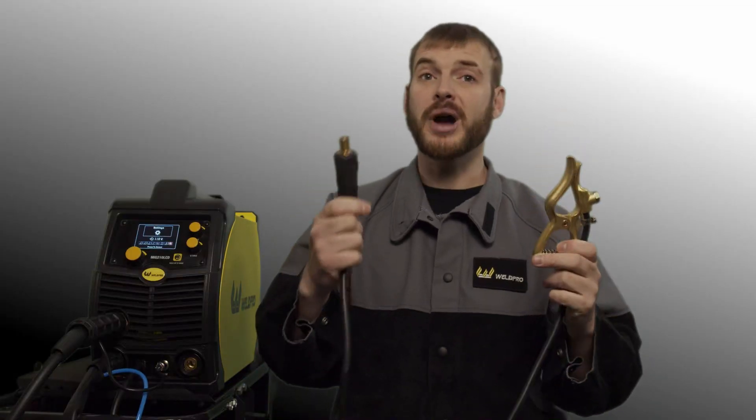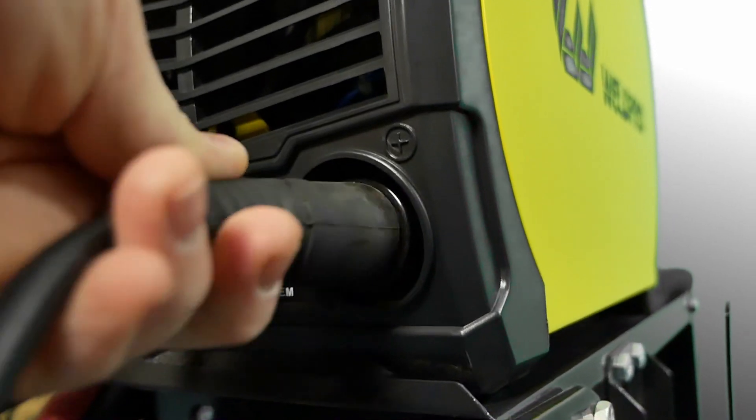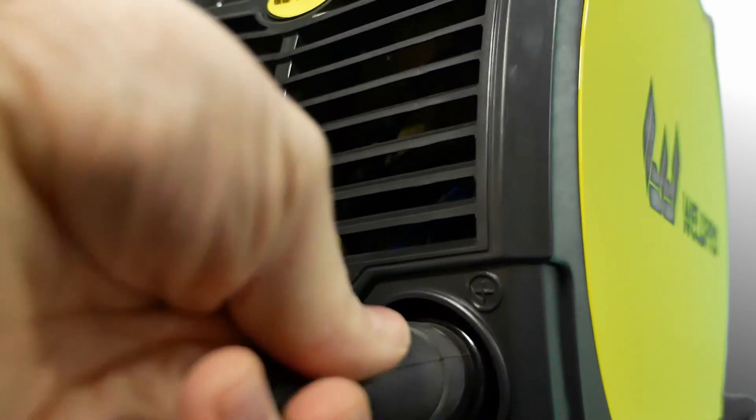The DINZ connector for your ground clamp will need to be switched over to the positive terminal on the front of the machine. Be sure to hook your ground clamp to a clean spot on your workpiece. When it comes to TIG welding, having a good ground connection is extremely important.